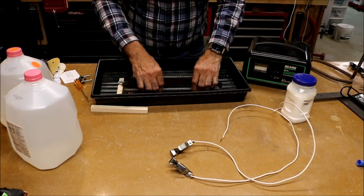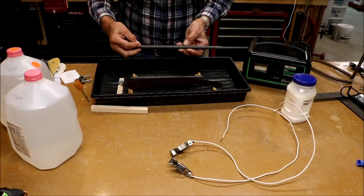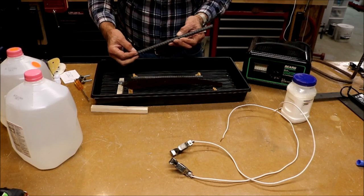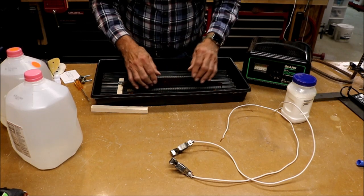Then you need some sacrificial iron. So I'm using this, which is re-rod, reinforcing rod. I got it at Home Depot and I just cut it up. And it's iron. You can use a coffee can. You can use steel.